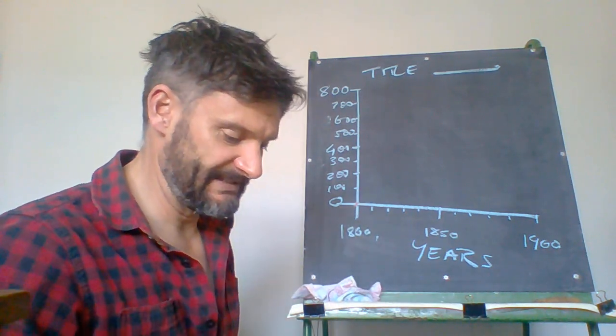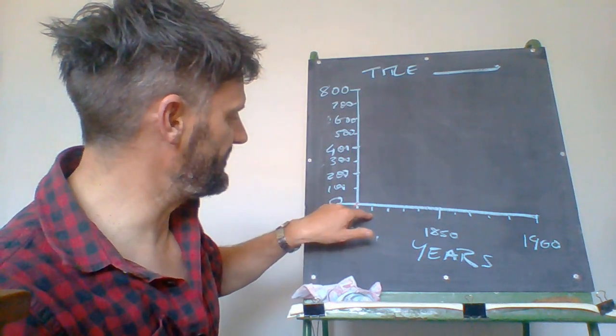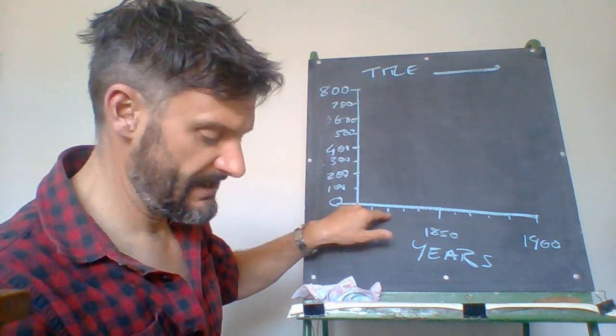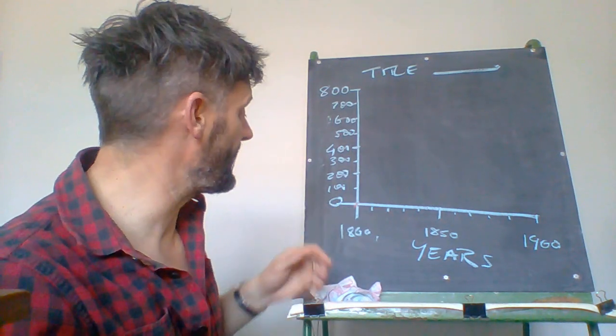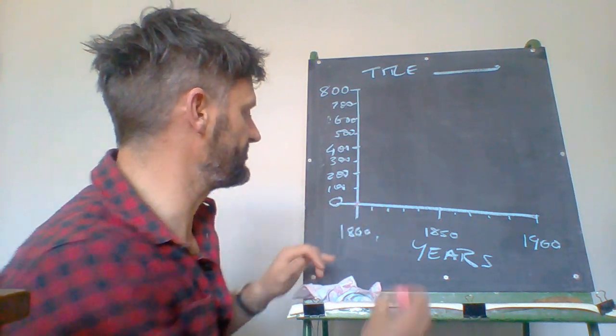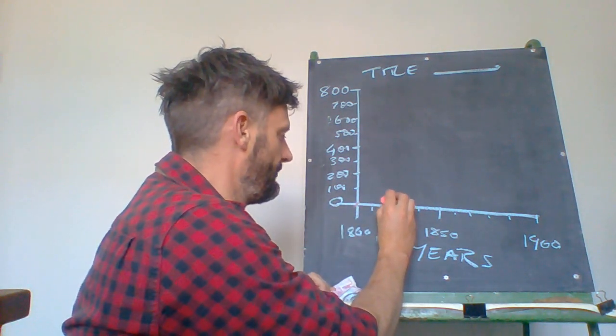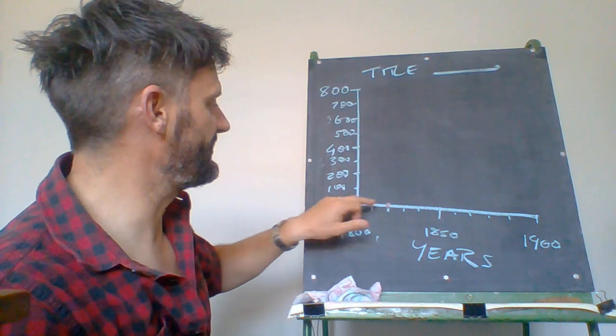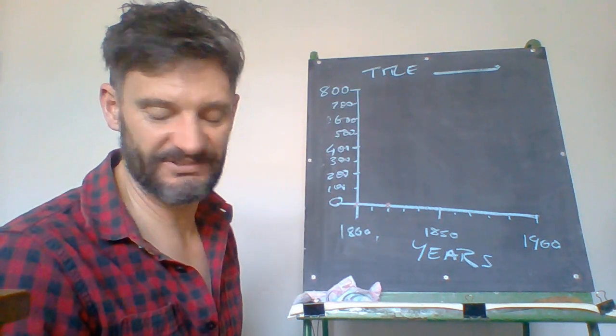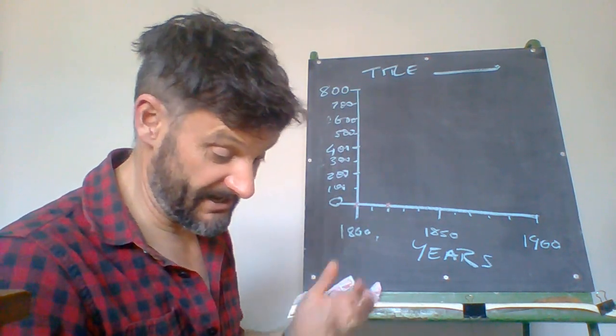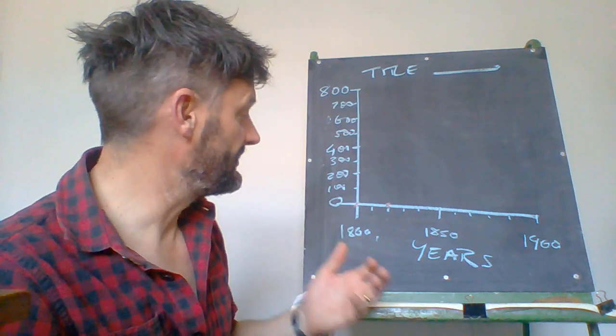The next one is for 1820. So 1810, 1820 in there and the figure there is 400. Now again that is pretty much not even going to register on my scale because 100,000, 400 out of 100,000 is very very small. But things are going to change as we get closer to some big data.